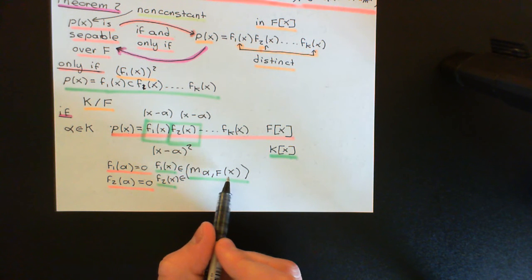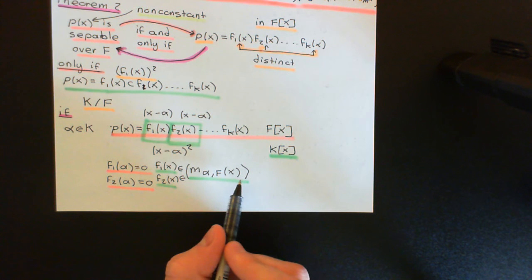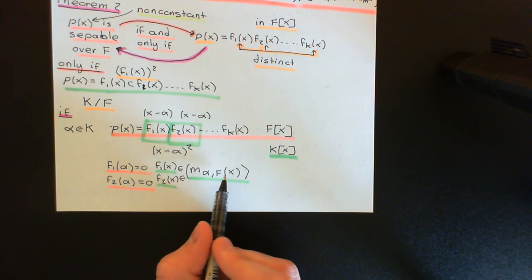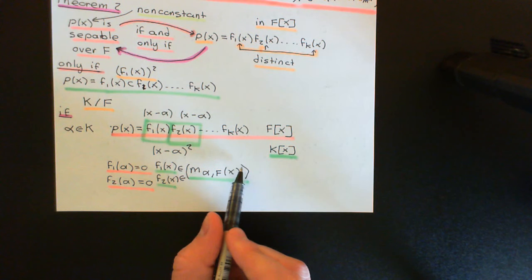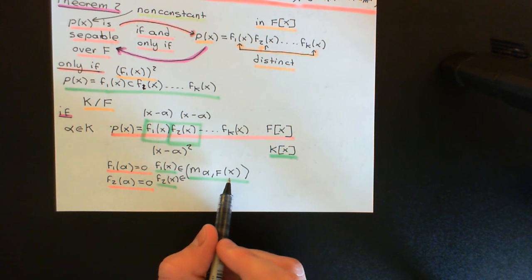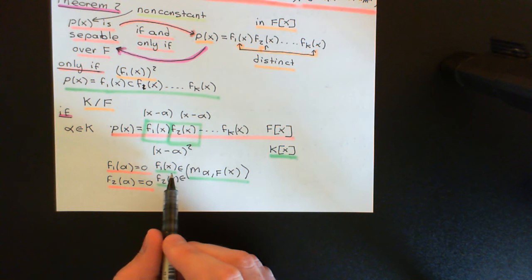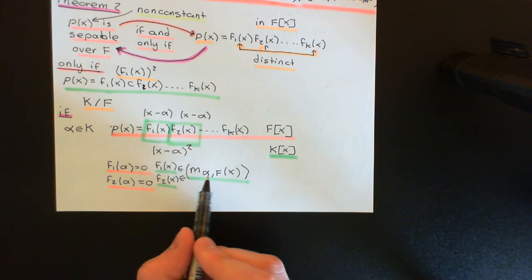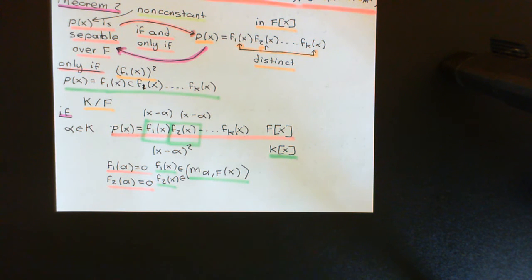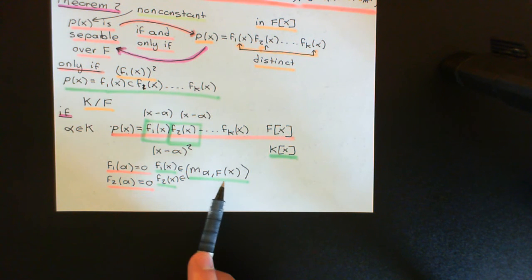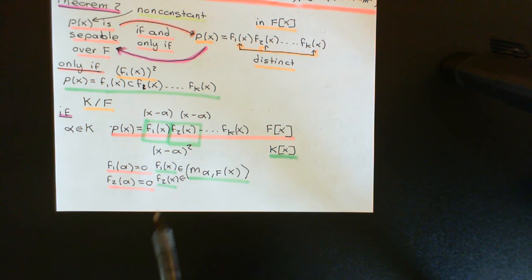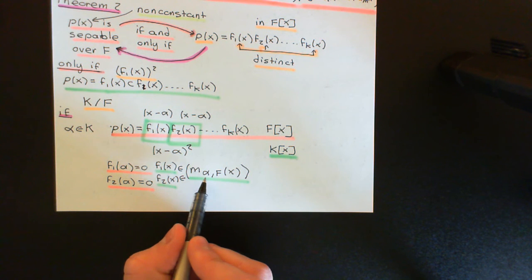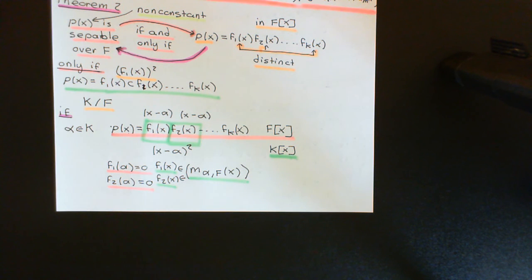The minimal polynomial for alpha over F is irreducible; units times it share the same degree and are also irreducible. Any polynomial in that principal ideal of higher degree — the minimal polynomial times something of degree ≥ 1 — cannot be irreducible. So if F₁(X) and F₂(X) are both irreducible elements of that ideal, they must each just be a unit times the minimal polynomial.